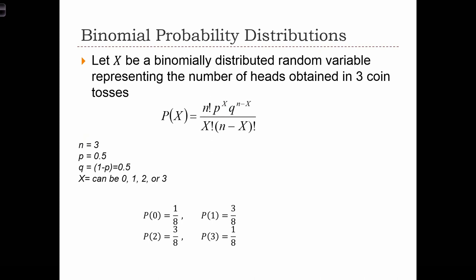What if we wanted to calculate the entire probability distribution for a binomially distributed random variable? We can do that by calculating the probability of all of the different outcomes of the random variable. So in this case, let x be a binomially distributed random variable representing the number of heads obtained in 3 coin tosses.